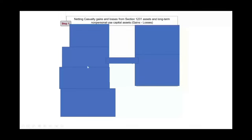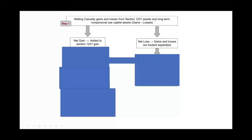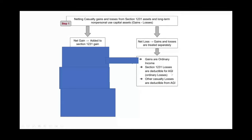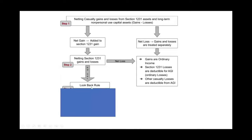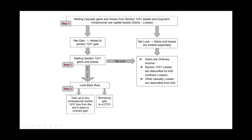To summarize the three steps: first, net casualty and theft gains and losses from Section 1231 assets. A net gain feeds into Section 1231; a net loss means gains and losses are treated separately as ordinary. Second, combine with other Section 1231 gains and losses. A net loss is treated as ordinary; a net gain moves to step three. Third, apply the five-year look-back period — recapture any prior ordinary losses as ordinary income, with the remainder treated as long-term capital gain.